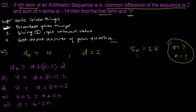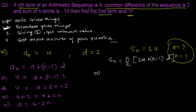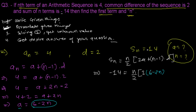Now let's formulate the sum of n terms. The formula is Sₙ = n/2 × [2a + (n-1)d]. We're given Sₙ = -14, so: -14 = n/2 × [2a + (n-1)×2]. We already found a = 6 - 2n, so substituting: -14 = n/2 × [2(6 - 2n) + (n-1)×2], and d = 2.